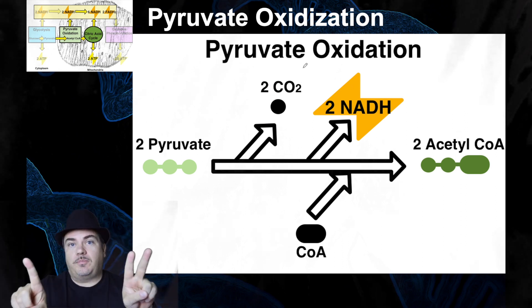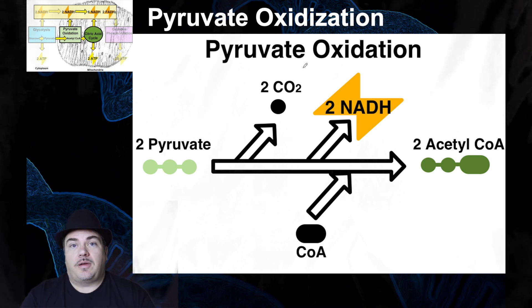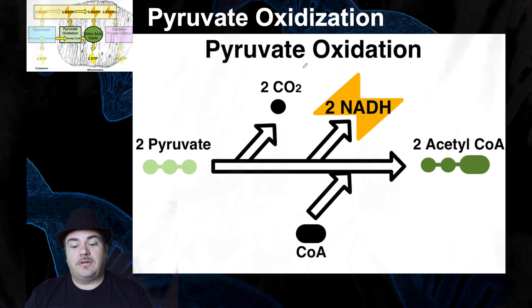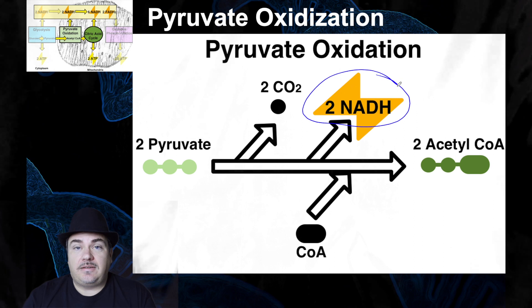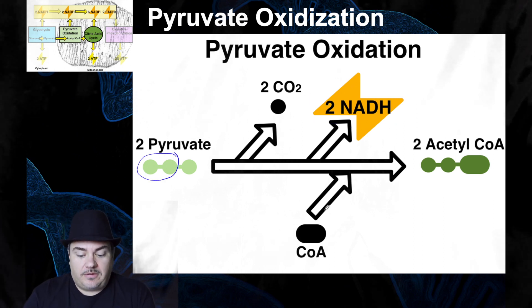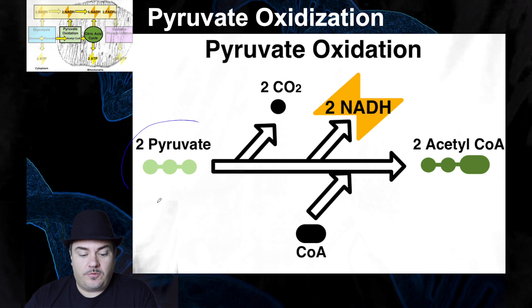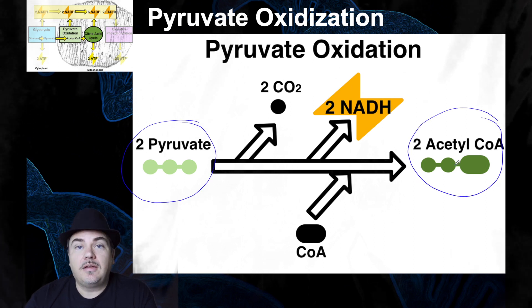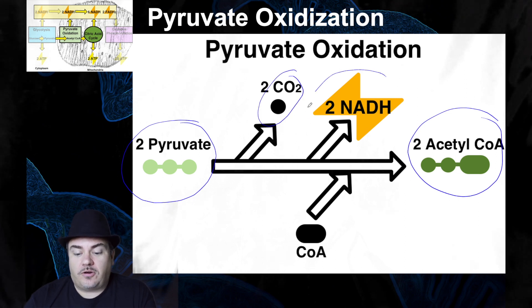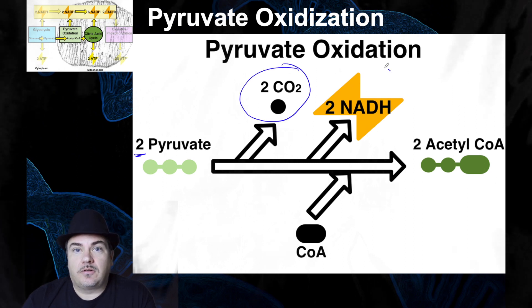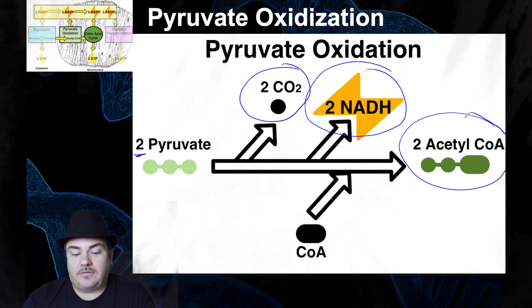Since you took a three-carbon molecule and broke it into a two-carbon molecule plus CO2, that's a catabolic reaction — which means it's exergonic and it's going to release energy. That energy is captured through energy coupling to charge up the electron carrier NADH. Then you take the two carbons that are left, combine them with coenzyme A, and that creates acetyl-CoA. So pyruvate oxidation takes pyruvate from glycolysis, turns it into acetyl-CoA, releases CO2 as waste, and charges up NADH batteries. From one glucose, you get two pyruvates, so you generate two CO2s, two NADHs, and two acetyl-CoAs.